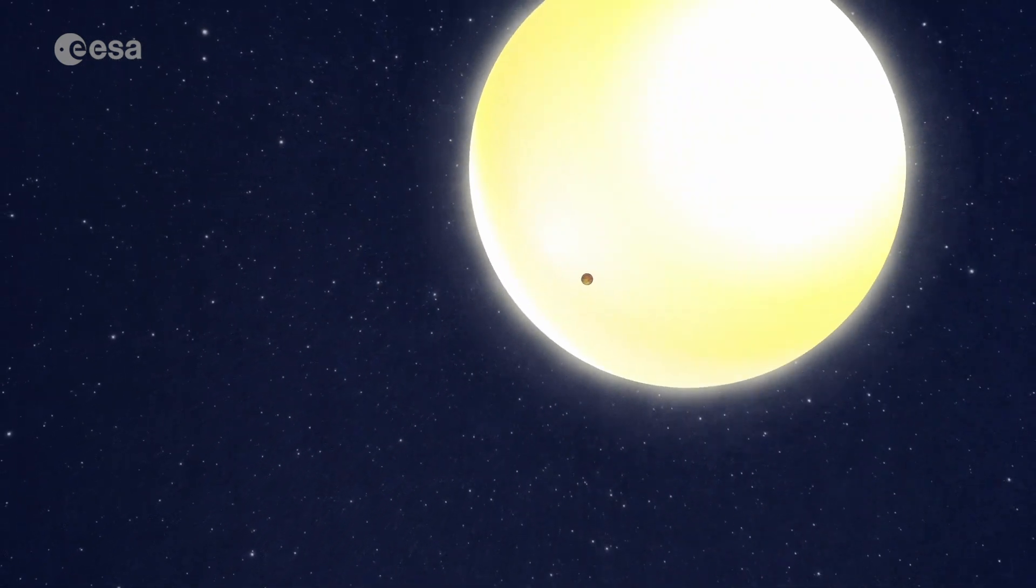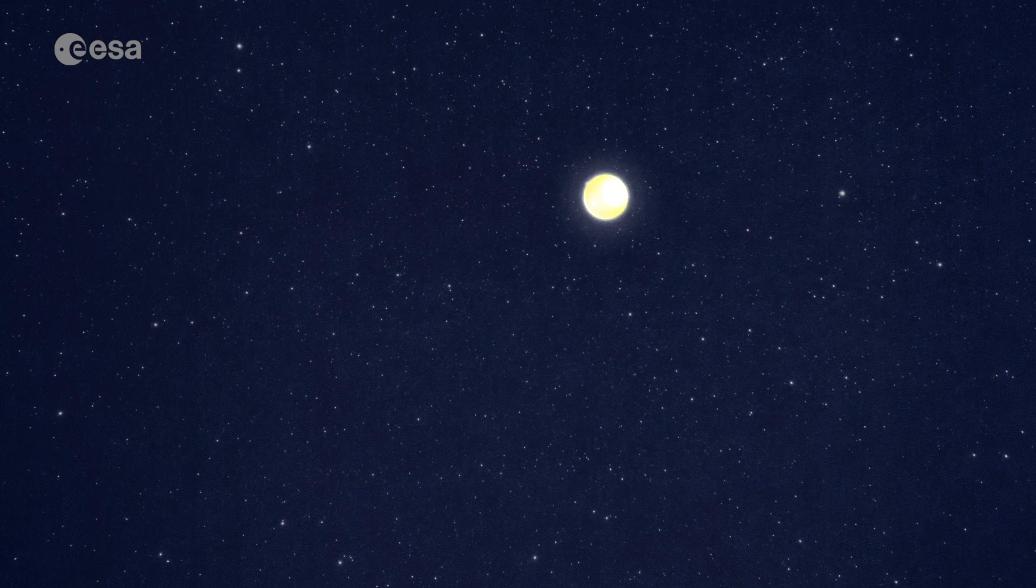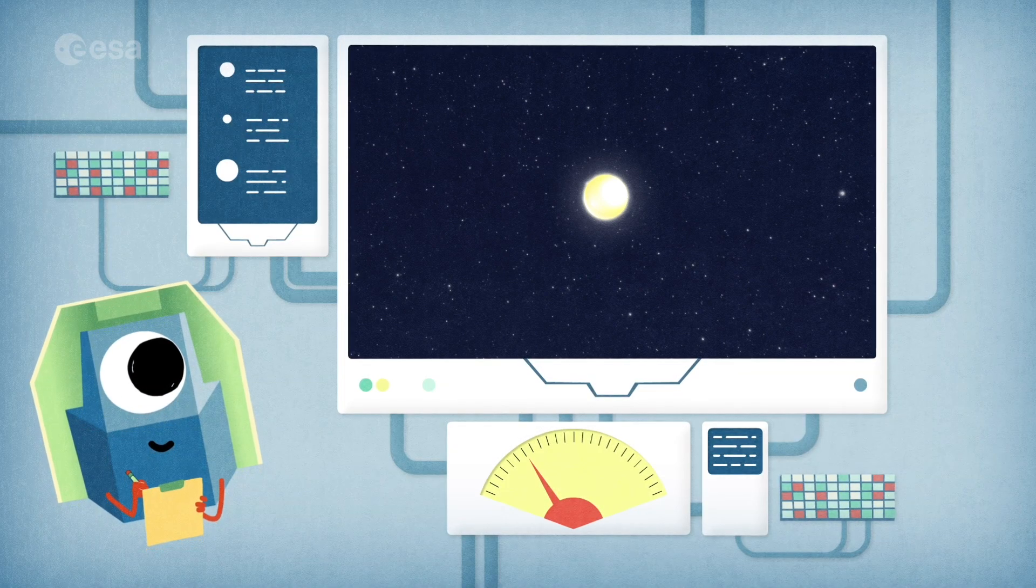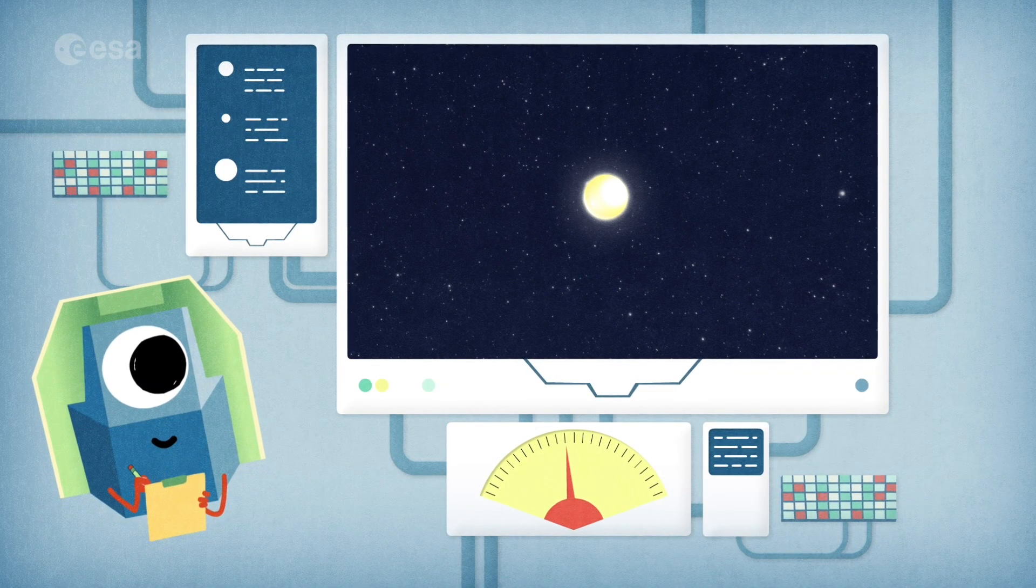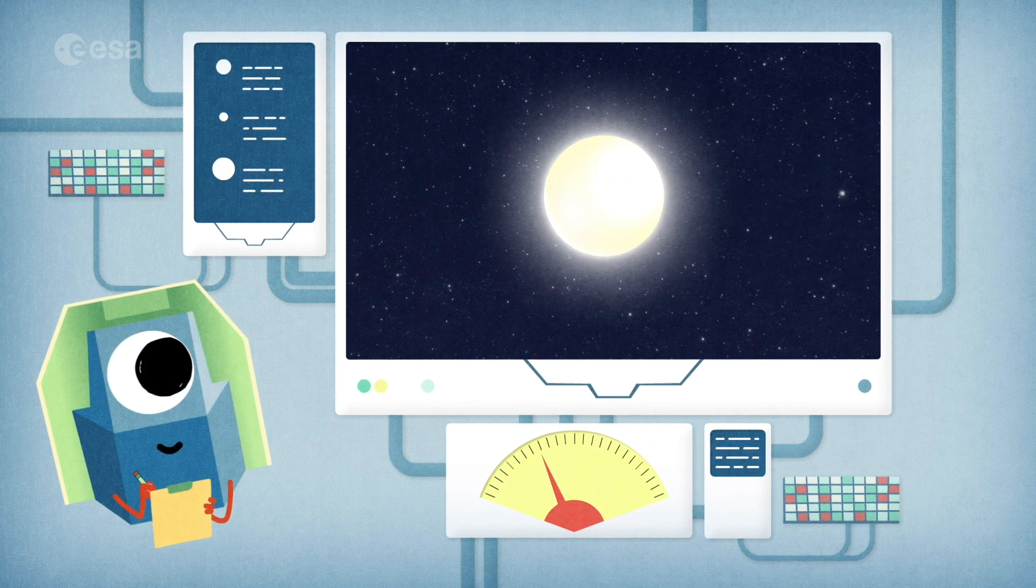Because exoplanets are very hard to see directly, hidden by the bright glare of the stars they orbit, astronomers mostly do not try to do it. Neither will CHEOPS. Instead, it will look for the effects those planets might have in the light coming from the stars they orbit.